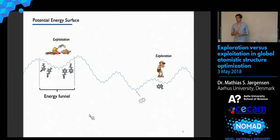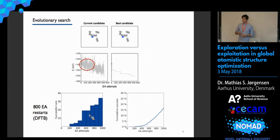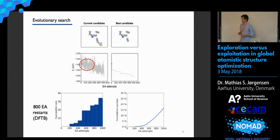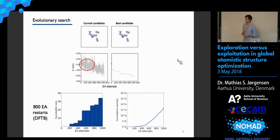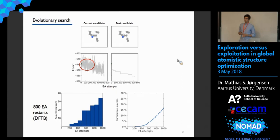Our workhorse for the global optimization search is the evolutionary algorithm. In this video, we see to the left our current candidate structure and to the right the currently best candidate found in the search. We produce a lot of local minimum structures during the search, and in many standard global structure optimization methods this data is not used — it's basically a waste product. We only use the most stable structures in the population to evolve the search. What we aim to do is use all of this data to guide the evolutionary algorithm to adapt its strategy based on the current state of the search space.